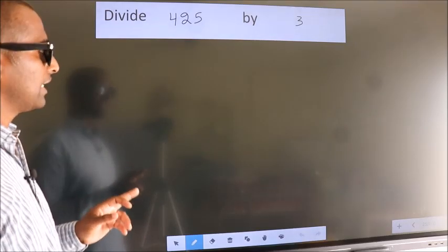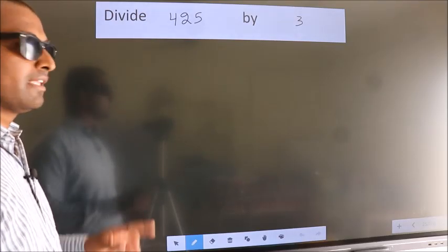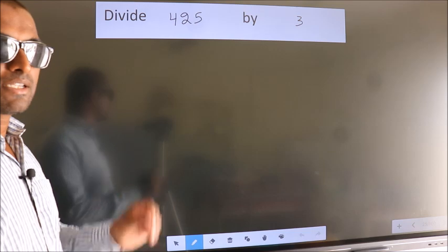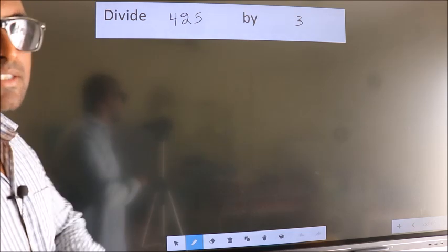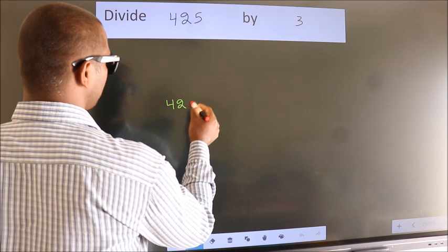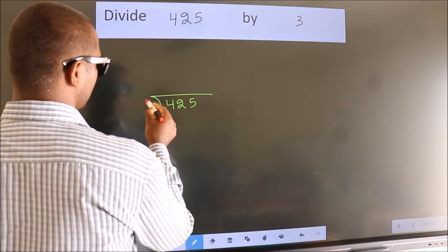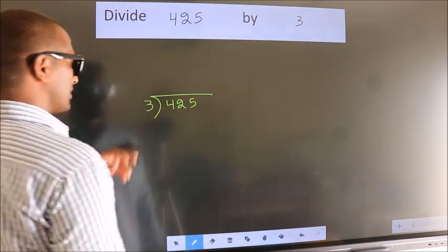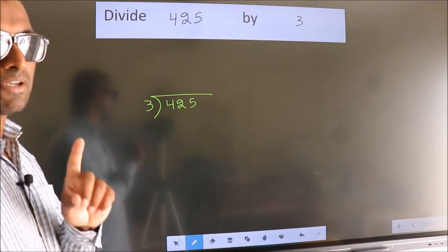Divide 425 by 3. To do this division, we should frame it in this way. 425 here, 3 here. This is your step 1.